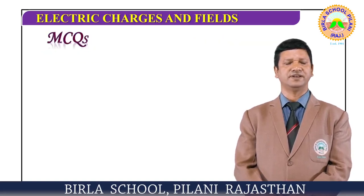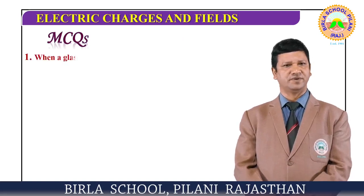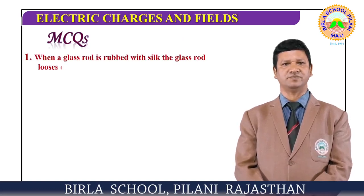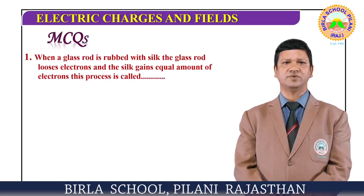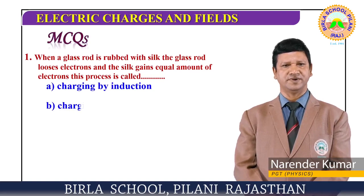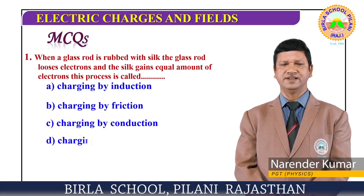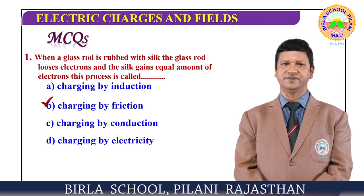Let us have a reflection on these topics. Question one: when a glass rod is rubbed with silk and the glass rod loses electrons while the silk gains an equal amount of electrons, this process is called — charging by induction, charging by friction, charging by conduction, or charging by electricity? The correct answer is charging by friction.